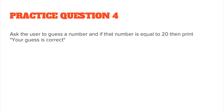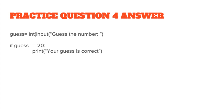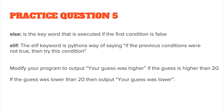In practice question 4, ask the user to guess a number and if that number equals 20, print 'Your guess is correct'. So guess = int(input('Guess the number')). If guess == 20, then print that the guess is correct. When the user types 30, nothing is output. If the user types 20, you output 'Your guess is correct'. That's all this question requires.